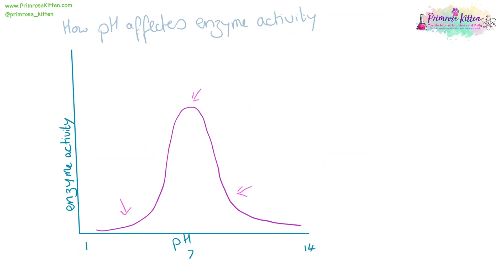Our curve for pH is much more symmetrical. We still have an optimal pH, but when it is too high or too low, the bonds aren't going to be in place, so the active site of the enzyme is going to be broken down — so again, it's going to be denatured.